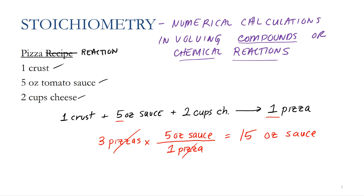This is how I'm going to calculate similar types of problems involving a chemical equation. We can do this for any of the relationships — between reactants and products, between sauce and pizza, or cheese and pizza. For instance, if I have 20 cups of cheese, how much sauce do I need to make as many pizzas as I can? We'd use the relationship between cheese and sauce. These are stoichiometric calculations, and the same types of questions can be asked for chemical reactions: how much reactant do I need to make so much product? That, in essence, is stoichiometry.